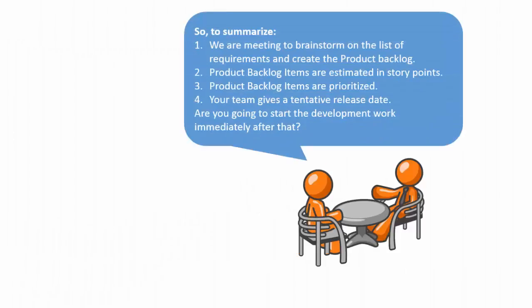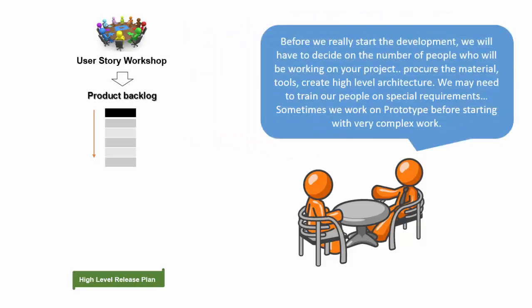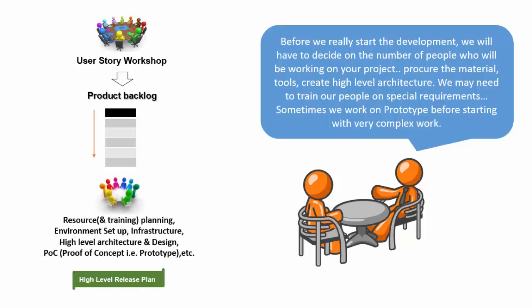So to summarize: we are meeting to brainstorm on the list of requirements and create the product backlog. Product backlog items are estimated in story points and prioritized. Your team gives a tentative release date. Are you going to start development work immediately after that? Before we really start development, we will decide on the number of people working on your project, procure the material and tools, and create a high-level architecture.